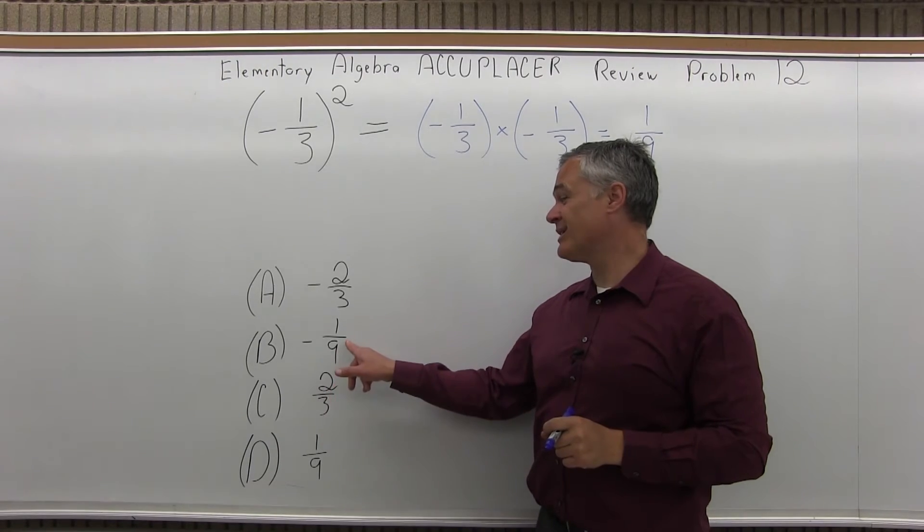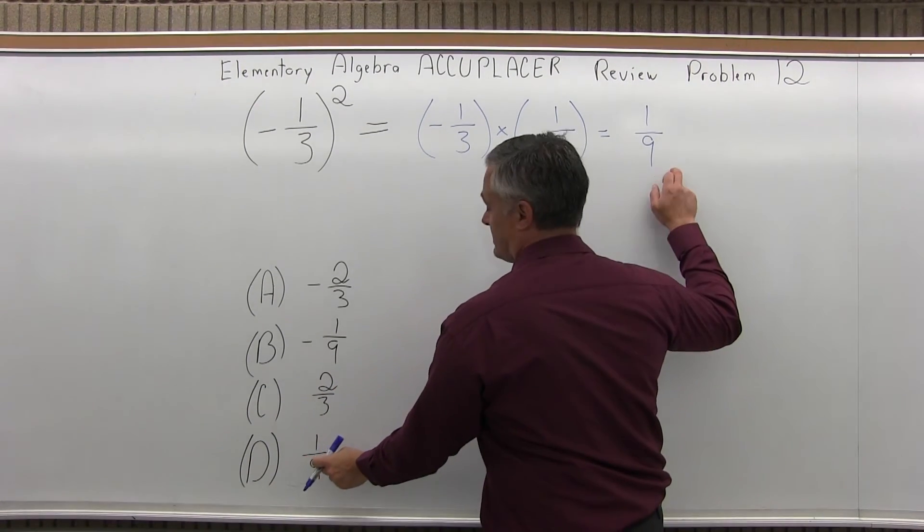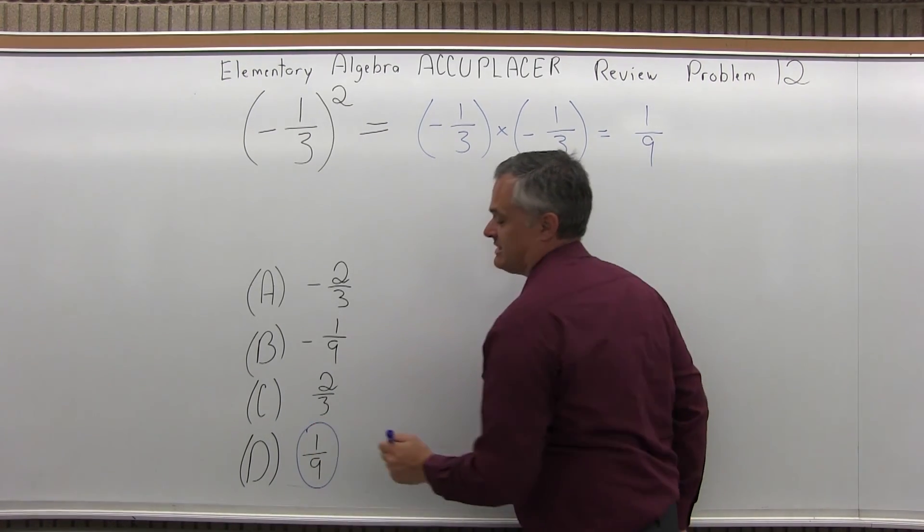Notice one option is positive one-ninth, the other is negative one-ninth. The correct answer is positive one-ninth which is option D.